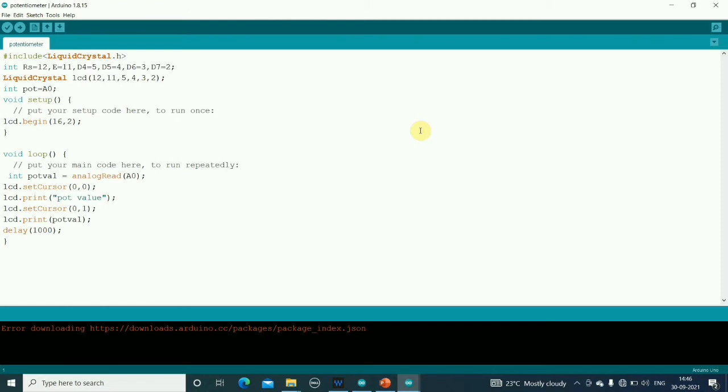In the loop, first we have to read the values using the analogRead function. AnalogRead A0 will read the values, and those values will be stored in pot_value. These pot values will be printed on the LCD, and there will be a delay of 1000 milliseconds added at the end of the code. This is the simple code for interfacing the potentiometer.